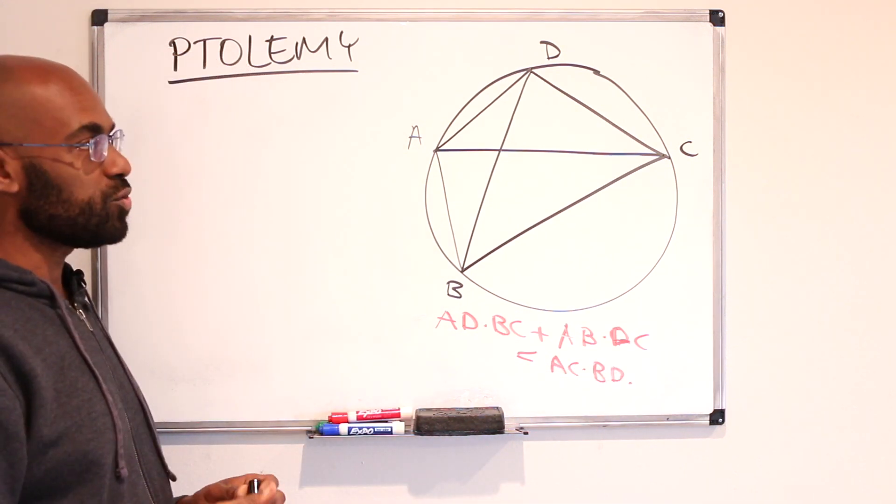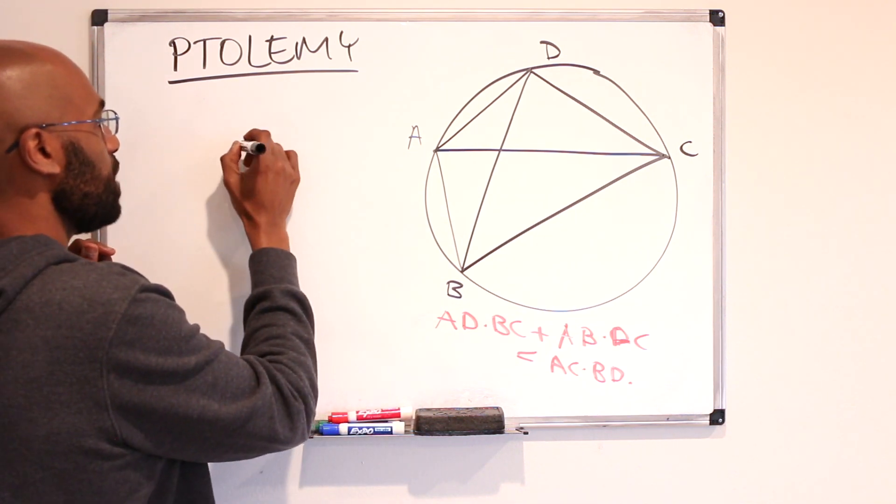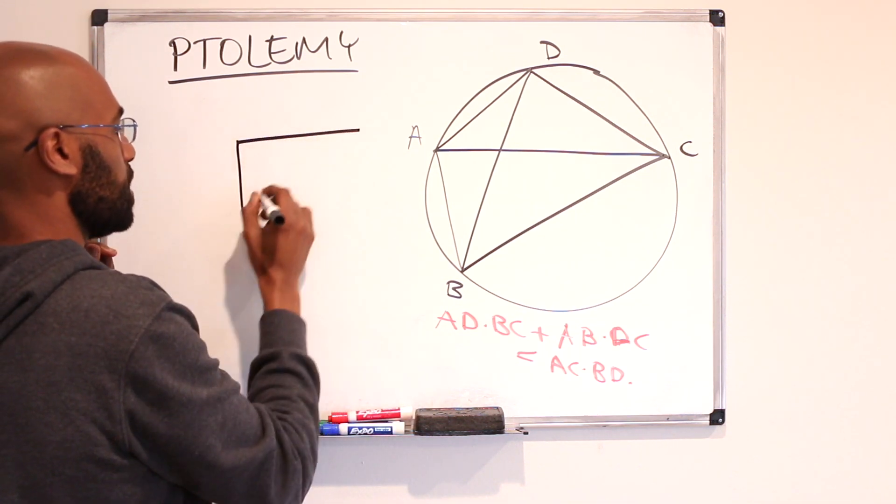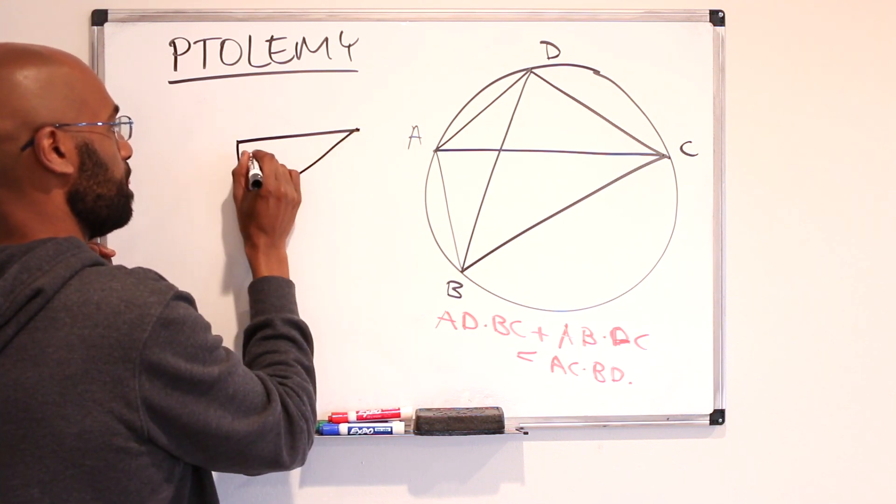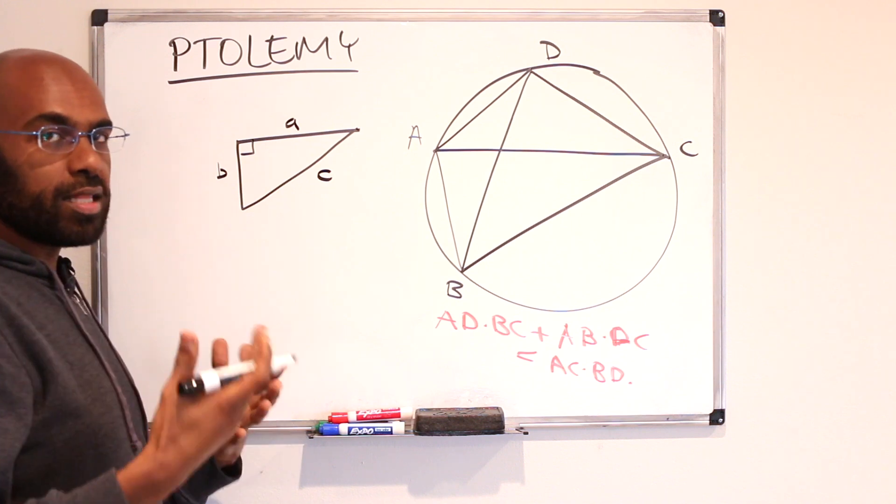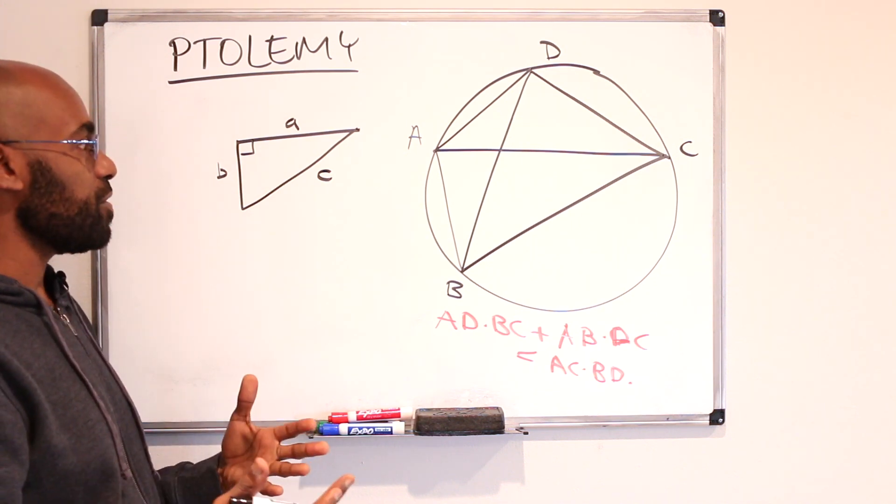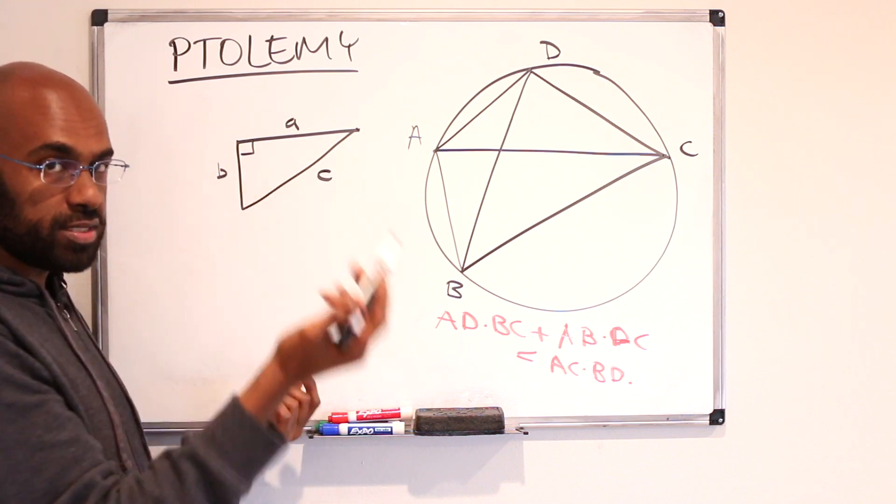Now our central question here is why this is true but let's actually see a cool consequence of this. Let's say you have a triangle that has a right angle here and these side lengths are A and B and this is C. A classical theorem in geometry tells us the relationship between these. It's Pythagorean theorem and it says A squared plus B squared is C squared.